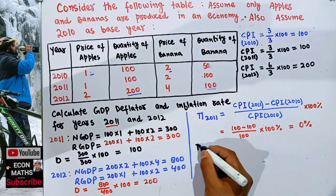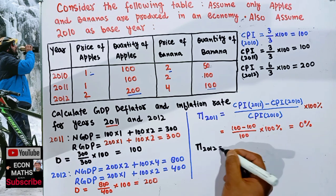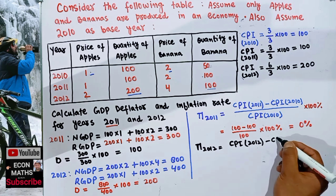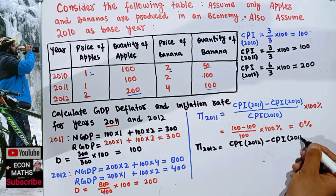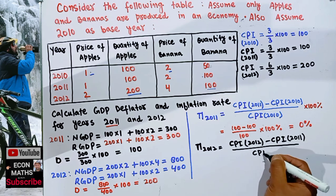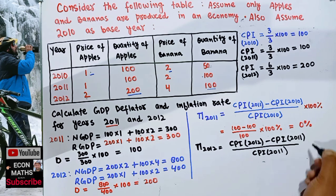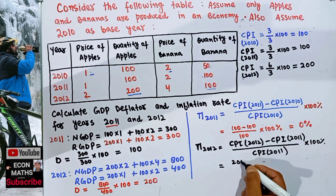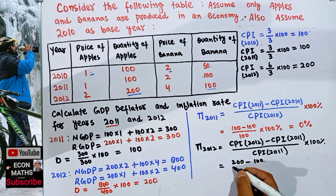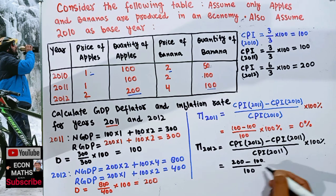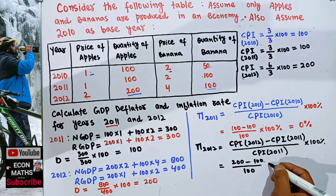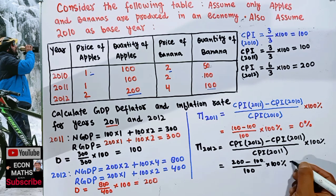The inflation rate for 2012 equals CPI in 2012 minus CPI in 2011, divided by CPI in 2011, times 100%. That is (200 minus 100) divided by 100, times 100%, which equals 100 divided by 100, times 100% — giving an inflation rate of 100% for 2012.